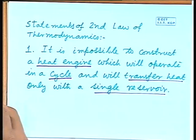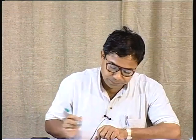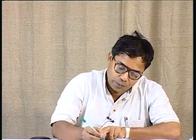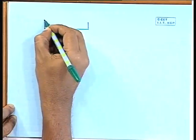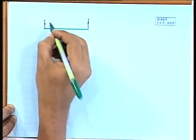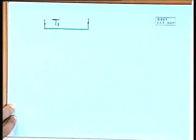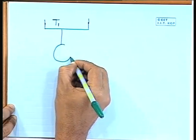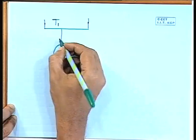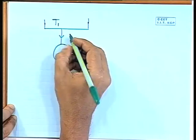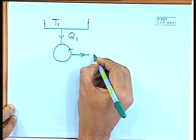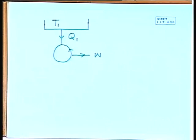What is stated by the first statement of second law is like this: a heat engine is a device which converts thermal energy into work. Let us say we have a thermal reservoir at temperature T1 and a cyclic device converting thermal energy into work — so this is Q1 in and W out. Second law says that this is impossible.